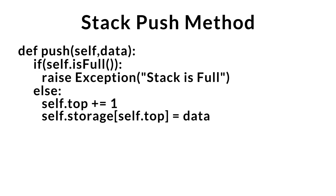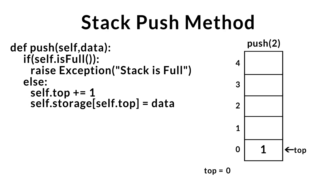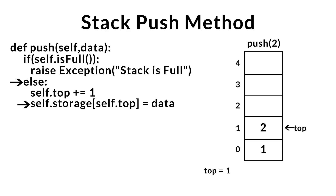Now let's take a look at the push method in action. Starting with an empty stack and pushing one: we check if the stack is full — it's not — so we increment top and insert the data. Pushing two: again not full, we calculate the new top index and insert the data. Pushing three: not full, we increment top, giving us the new position, and insert the data at the top of the stack.